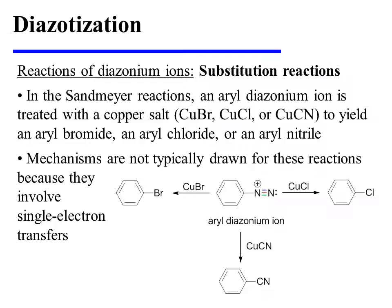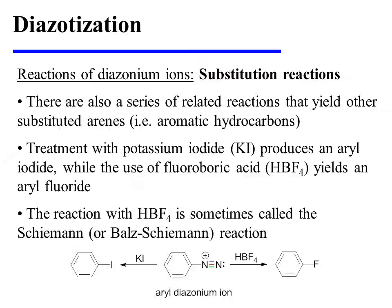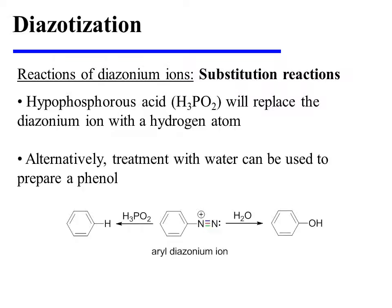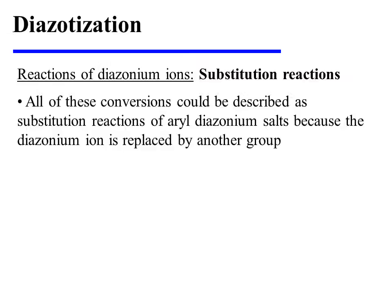Mechanisms are not typically drawn for these reactions because they involve single-electron transfers. There are also a series of related reactions that yield other substituted arenes. For instance, treatment with potassium iodide produces an aryl iodide, while the use of fluoroboric acid yields an aryl fluoride — a reaction sometimes called the Schiemann reaction. Additionally, hypophosphorus acid will replace the diazonium ion with a hydrogen atom. Alternatively, treatment with water can be used to prepare a phenol. All of these conversions can be described as substitution reactions of aryl diazonium salts, because the diazonium ion is replaced by another group in each instance.